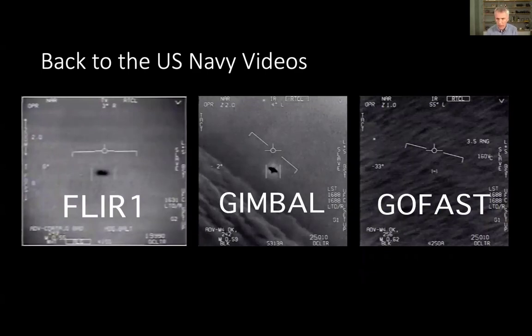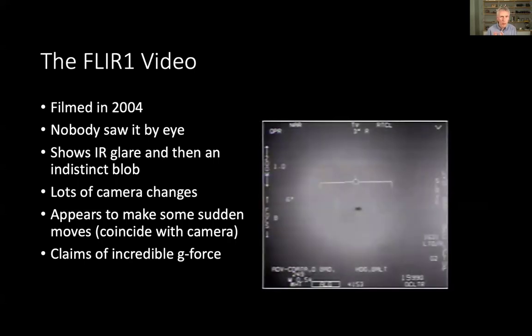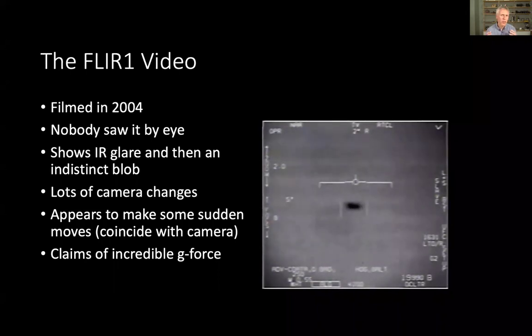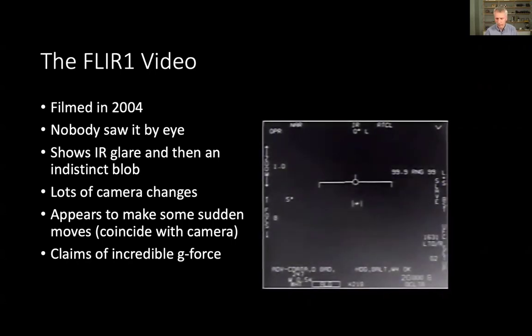FLIR 1, Gimbal, and GoFast. I'm going to start with FLIR 1. FLIR 1 was filmed in 2004. Important thing to note, nobody saw it by eye. It shows an infrared glare on the camera, and then an indistinct blob, and it kind of changes the camera a lot. And then it looks like it's making some sudden moves, and these sudden moves generally coincide with camera changes. So the question is, is the object moving, or is the camera moving? And people who think the object is moving claim that it's moving with incredible G-forces, incredibly high acceleration rates, which it would actually be if these were actual real movements. I think it comes out as something like 70 Gs, which is way in advance of any aircraft that we have currently. We're going to top out around like 10 tops, I think, or 20 for missiles.